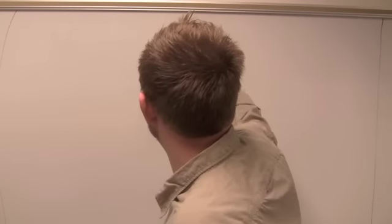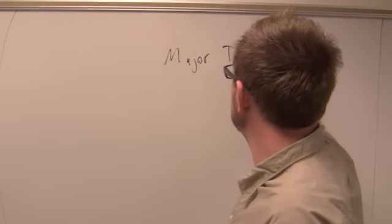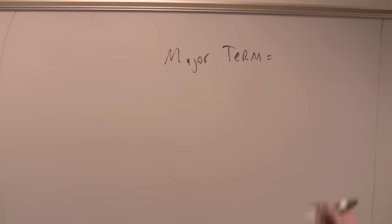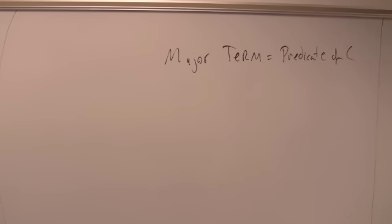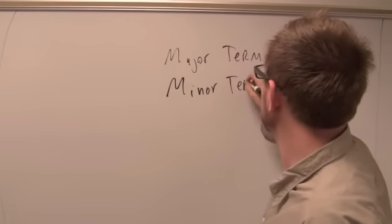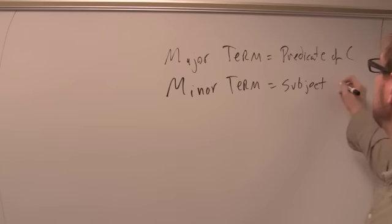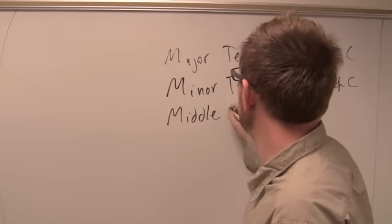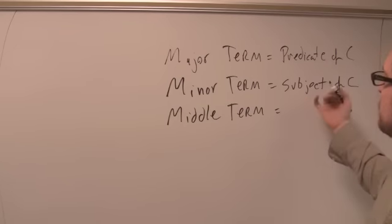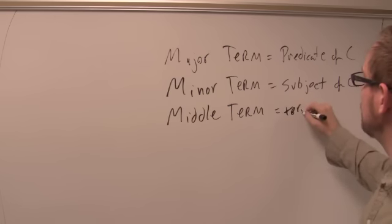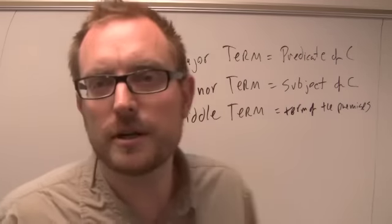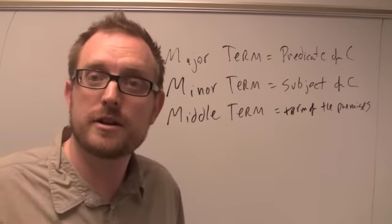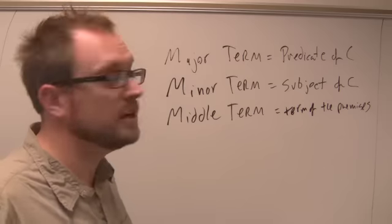The first idea is what we call the major term of an argument. The major term is the predicate of the conclusion. There is also the minor term, which is the subject of the conclusion. And finally there's a third term called the middle term, which is the term that only appears in the premises. Once we understand how these terms operate, we'll be in a good position to evaluate whether certain categorical syllogisms are valid.